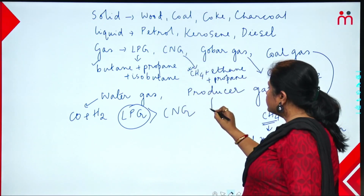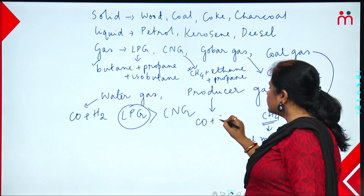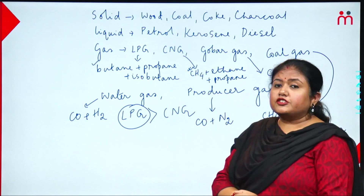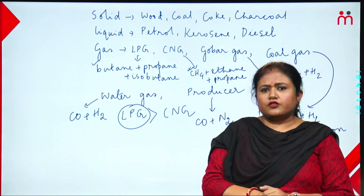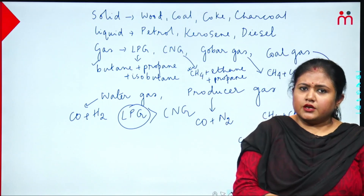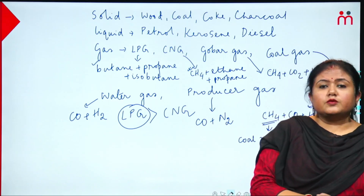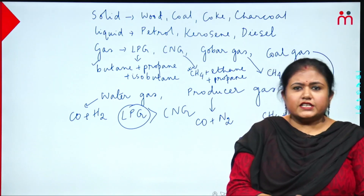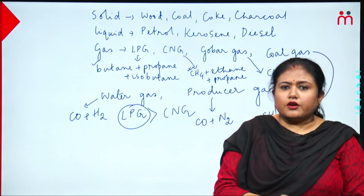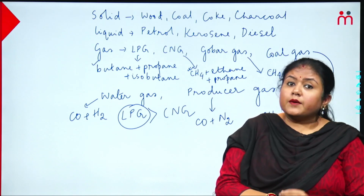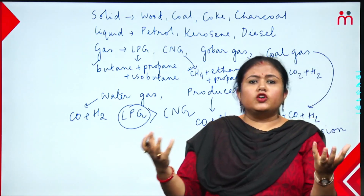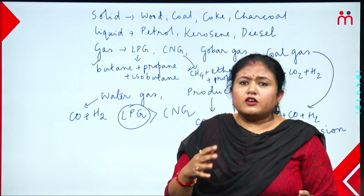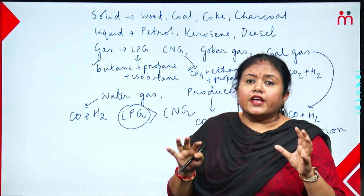Similarly, producer gas is a mixture of carbon monoxide and nitrogen — a mixture of carbon monoxide and nitrogen. Producer gas contains carbon monoxide and nitrogen. Producer gas is produced when air is passed through red hot coke — normal air passed over red hot coke produces producer gas.